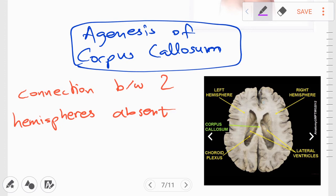Next is agenesis of corpus callosum. Corpus callosum is a band of white matter present in our brain, which connects the two hemispheres together. But if it's absent, it can result in neurological problems. You can see the corpus callosum mentioned right here.